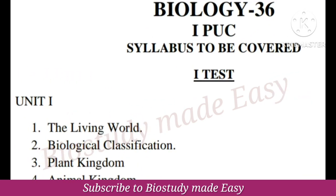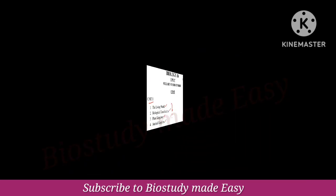In the first unit, there are four chapters: biological classification, plant kingdom, and animal kingdom. These four chapters are unit one in the first test.